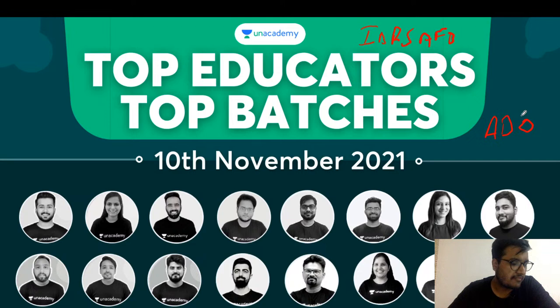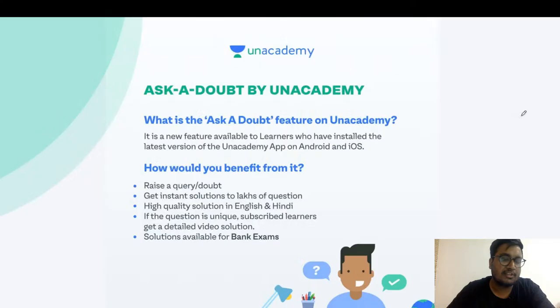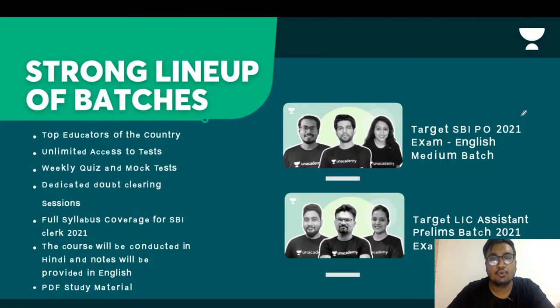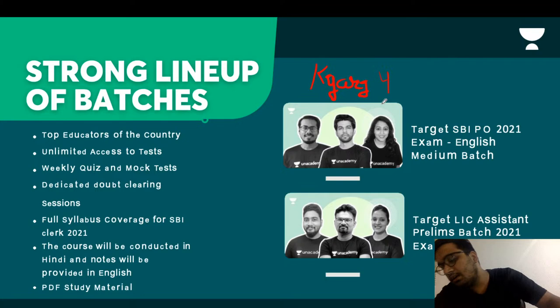If you have IBPS AFO to prepare for, you can join the IBPS AFO course on Unacademy's banking platform. If you take the IBPS AFO or banking platform subscription, you can use the code KGURG4. This code will provide you with a good discount. KGURG4 is the code that you must use.